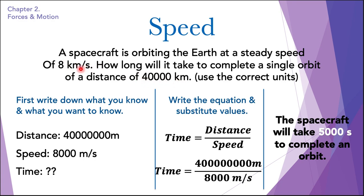To convert 8 kilometers per second into meters per second: since 1 kilometer equals 1000 meters, we multiply 8 by 1000 to get 8000 meters per second. For the distance of 40,000 kilometers, we multiply by 1000 as well to get the value in meters. Now we have both values in the correct units.